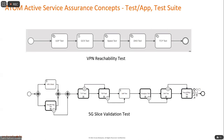This is a custom test suite with two tests: a VPN reachability test and a 5G slice variation test. Using out-of-box tests like DNS, TCP, and HTTP, you can create your own custom test suites with multiple blocks. Each block has detailed steps like issuing commands, running the test, and waiting for a few seconds — all configurable using the workflow builder.